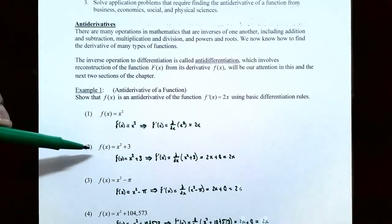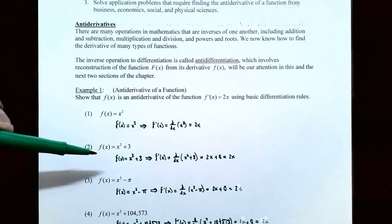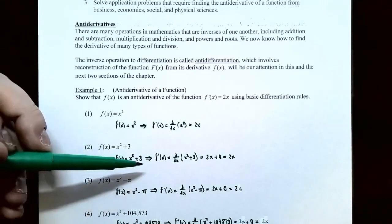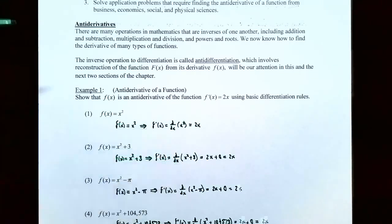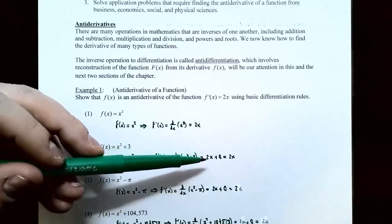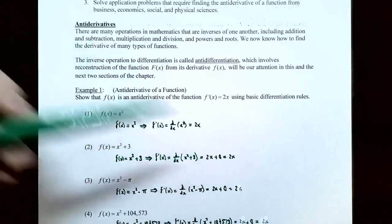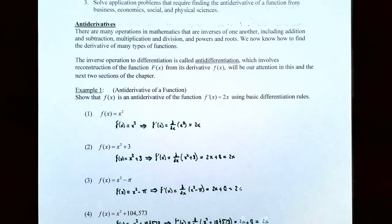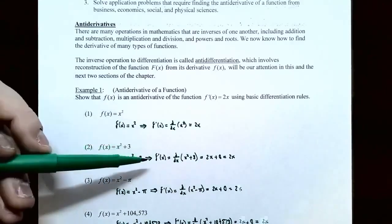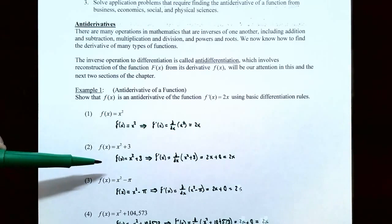Number two, f of x is equal to x squared plus 3. Let's take the derivative of this function f of x. The derivative f prime of x would be the derivative of x squared plus 3. The derivative of x squared using the power rule is 2x, and the derivative of 3, a constant, is 0. So you simplify and you do get 2x again. That means f of x equals x squared plus 3 is an antiderivative.